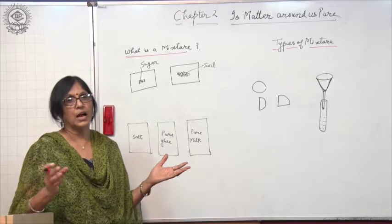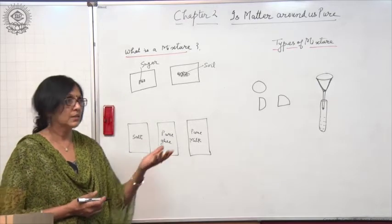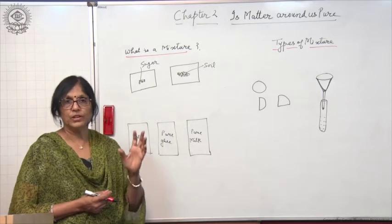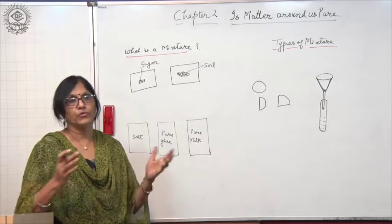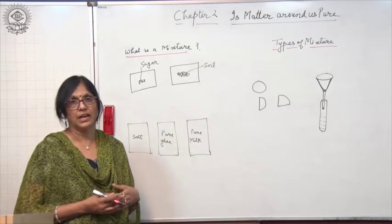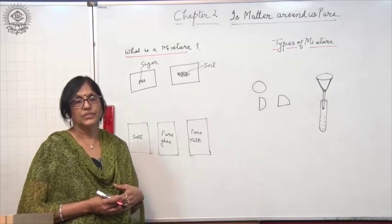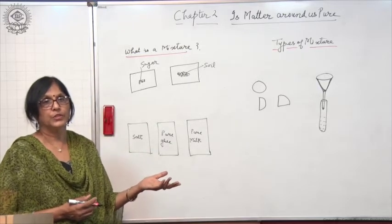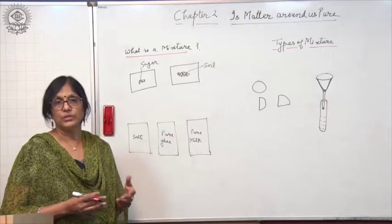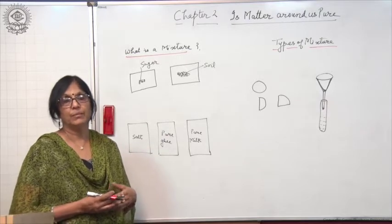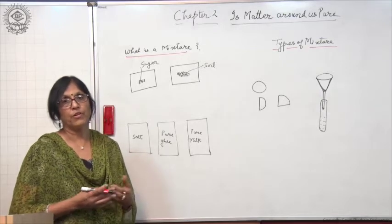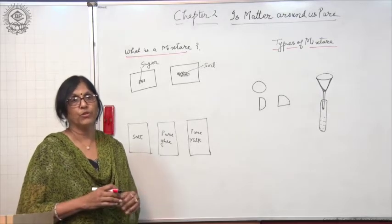Most of the things around us are mixtures. Air is a mixture — it does not contain only one gas; it is a mixture of so many gases like oxygen, carbon dioxide, nitrogen, and some inert gases like argon. Soft drinks are a mixture, sugar cane juice is a mixture, lemonade is a mixture. Even tap water is a mixture, because it contains some dissolved salts in it.